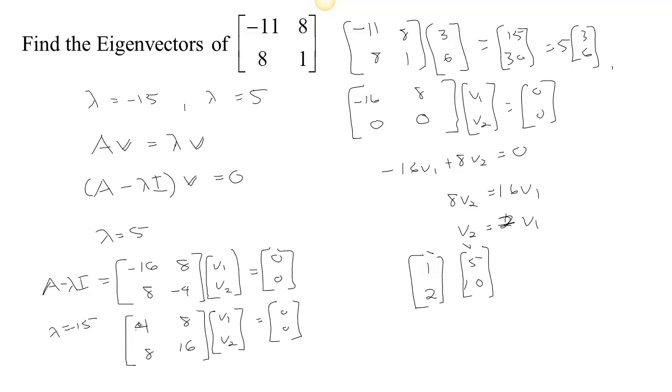If you take negative 2 times this row and add it to that row, you get this matrix. 4, 8, negative 2 times 4 would be negative 8 plus 8 makes 0, and negative 2 times 8 would be negative 16 plus 16 makes 0. So really you're just trying to solve this equation. The only one that matters is this top one. It says that 4 V1 plus 8 V2 has to equal 0. So that tells you that 8 V2 has to be negative 4 V1. So V2 has to be negative 1 half of V1.